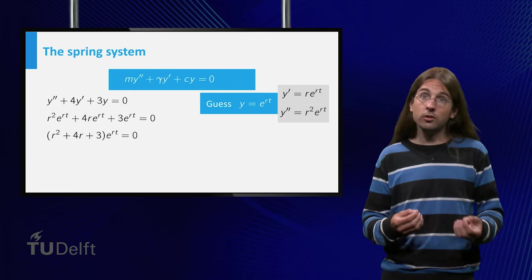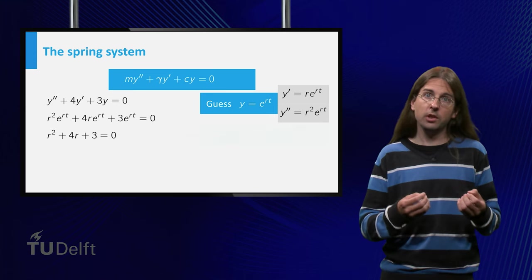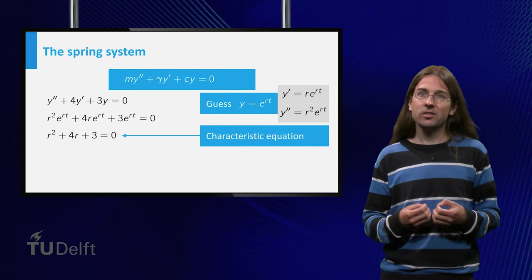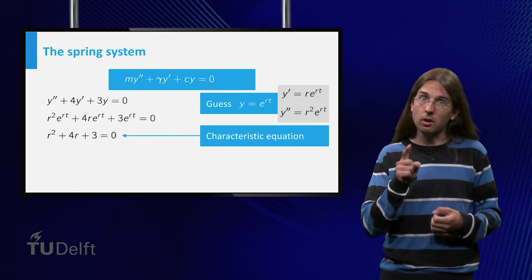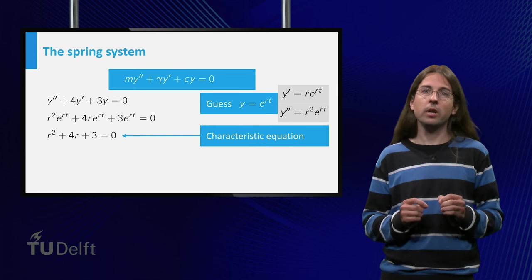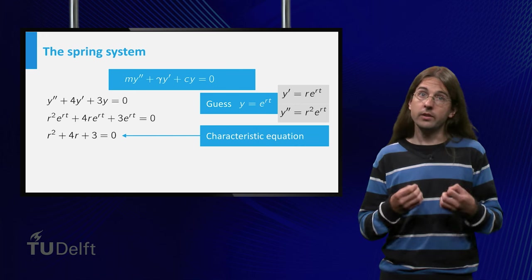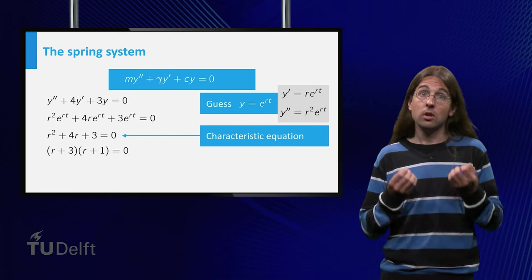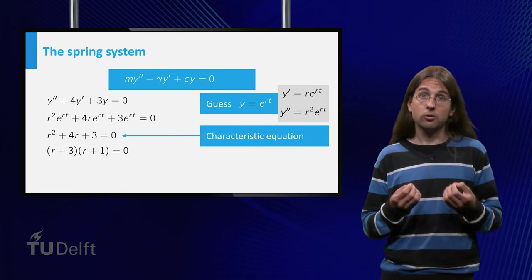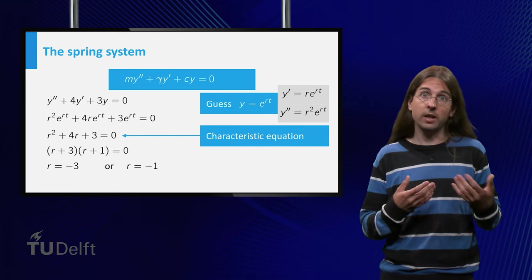As e to the rt is non-zero, we can divide by it to obtain r squared plus 4r plus 3 equals zero. This is a quadratic equation in r, so we know how to solve it. It is called the characteristic equation for this differential equation. In this case we can factor this expression to r plus 3 times r plus 1 equals zero, so the solutions are r equals minus 3 and r equals minus 1.